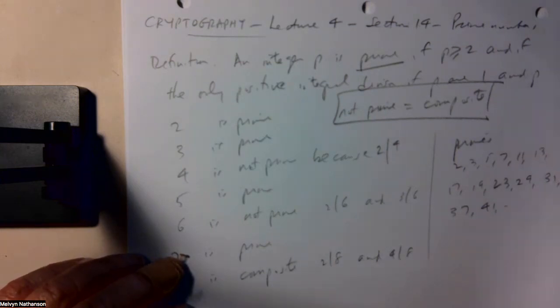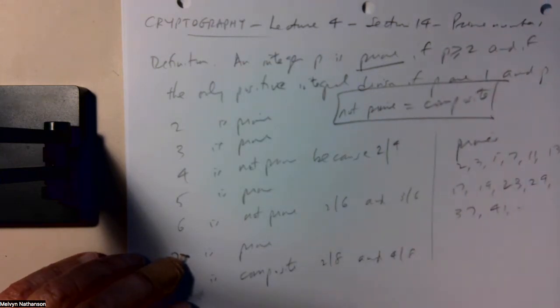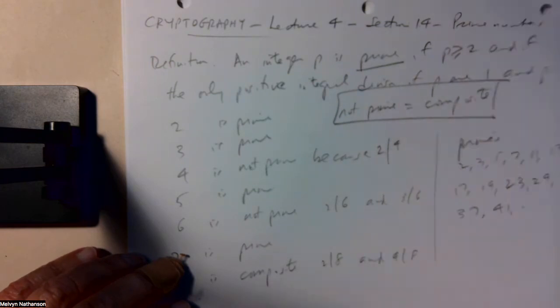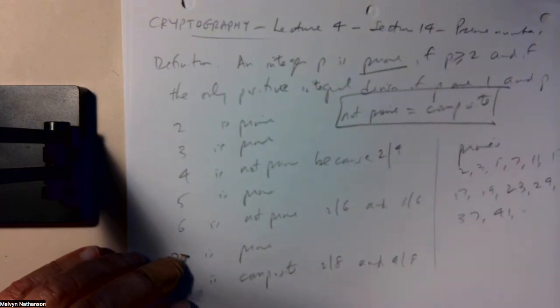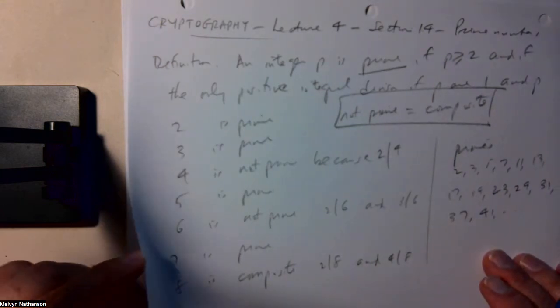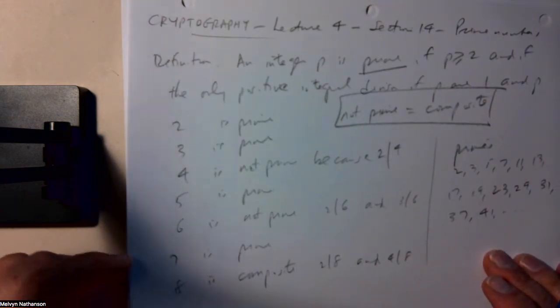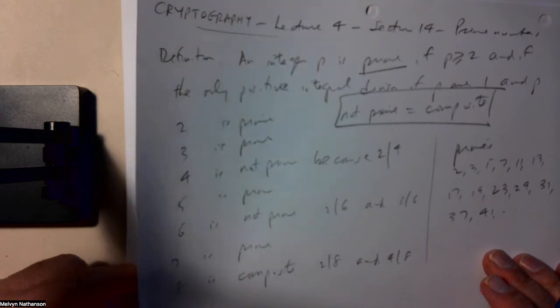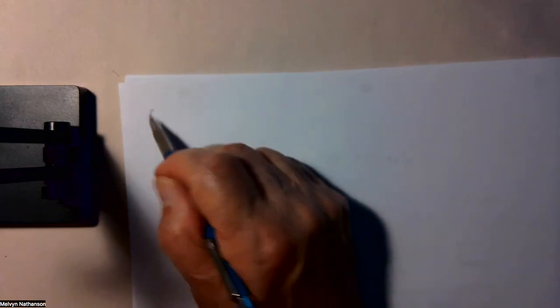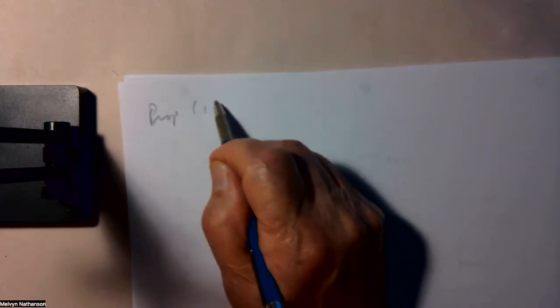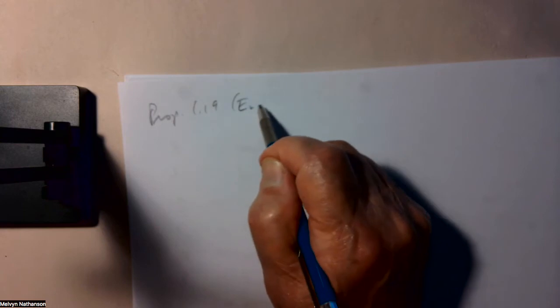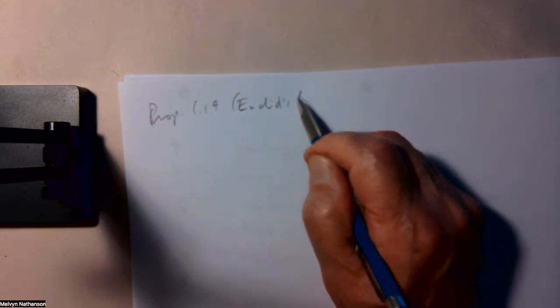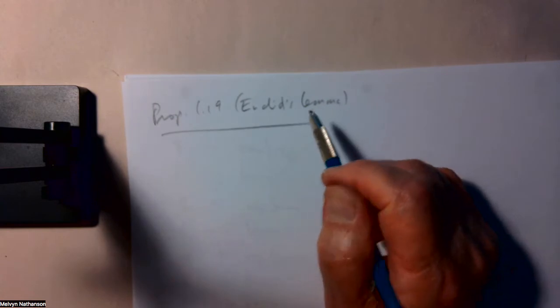A prime number has the following important property. This is sometimes called Euclid's Lemma because it's known to Euclid. In the text, this is Proposition 1.19.